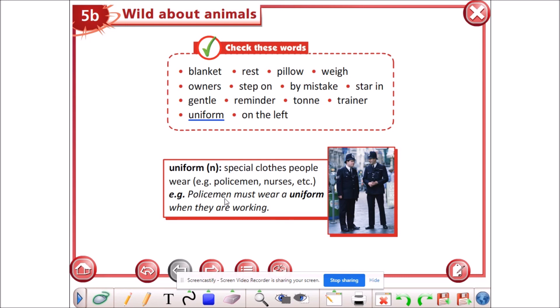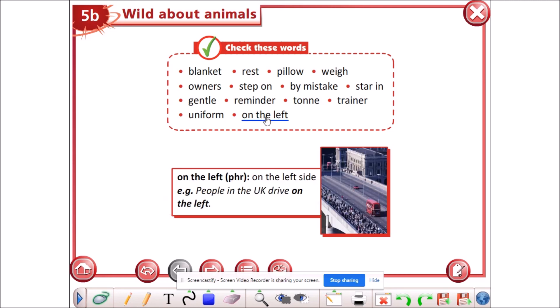Uniform. It's a noun. It means special clothes people wear, like policemen, nurses, and so on. And we have the last phrase here, on the left. On the left means on the left side. Like people in the UK drive on the left.